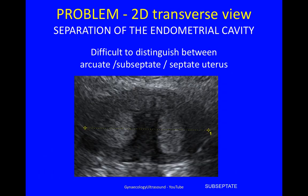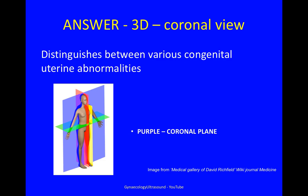The problem with the 2D transverse view is that if you see separation of the endometrial cavity, it's very difficult to distinguish on 2D between an arcuate, a subseptate, and a septate uterus. This uterus was in fact subseptate. The answer lies in the coronal view, which is seen on 3D — this distinguishes between the various congenital uterine anomalies.